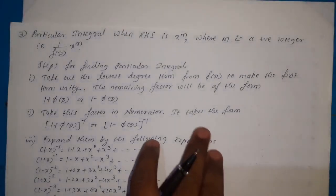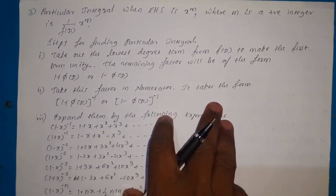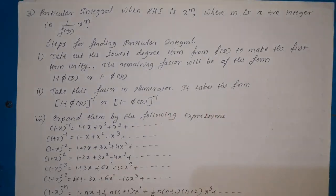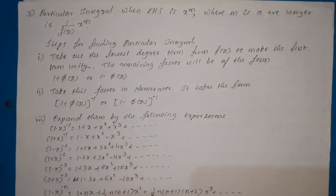Here the RHS is of the form x^m, where m is any positive integer. This is the method or rule to find the particular integral when RHS is x^m, that is 1 divided by f(D) of x^m. Here f(D) is the symbolic form of the differential equation — for example D² minus D³ plus D² plus some constant — equal to x^m where m is a positive integer. The power of x must be positive to apply this particular integral.